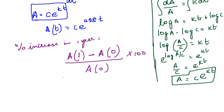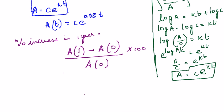So in this case it would be A(1) is nothing but Ce^(0.08), t is just one so it remains as it is, minus A(0).